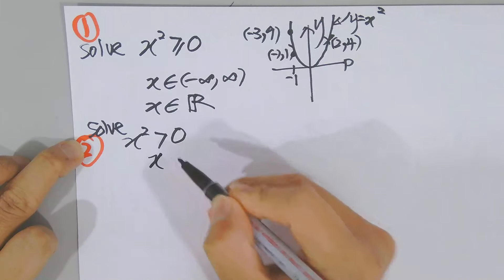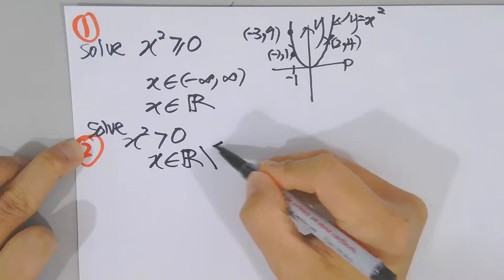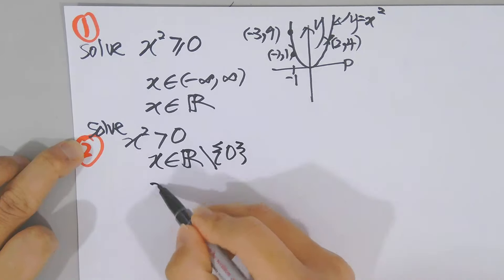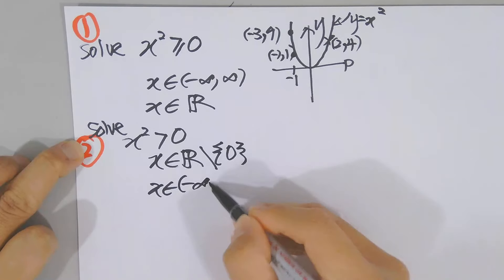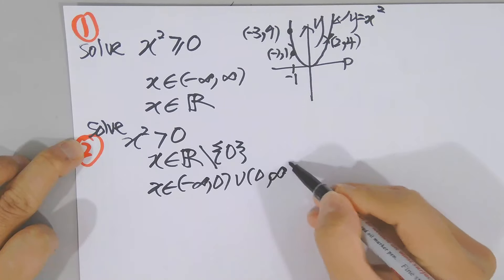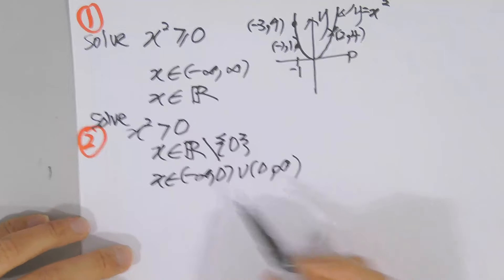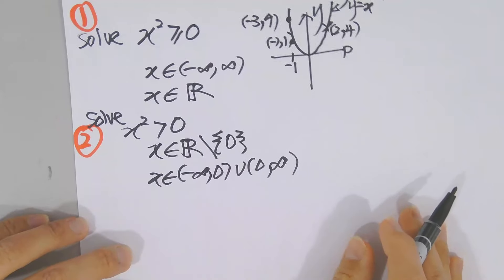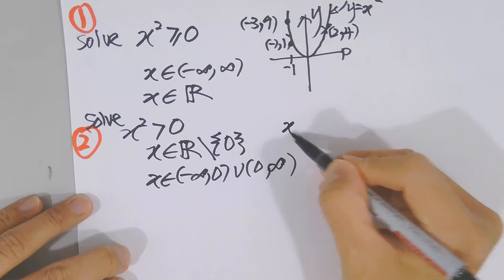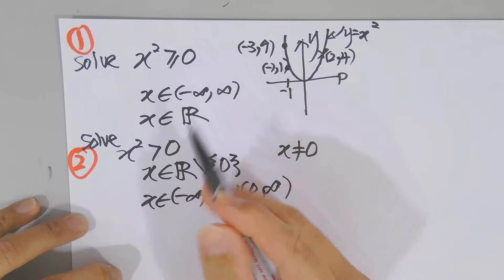The answer should be: any value of real number, but exclude zero — we don't accept x = 0. That's the difference. So the solution is negative infinity up to zero, union zero up to infinity. I exclude the value of x = 0, meaning x can be any value but cannot be zero.